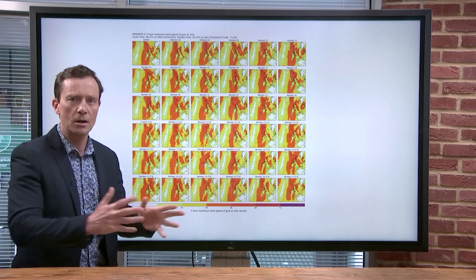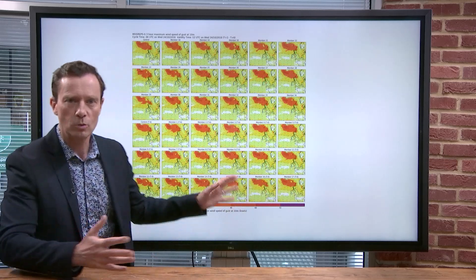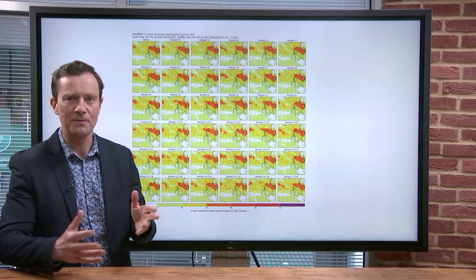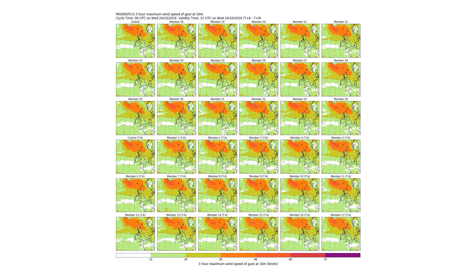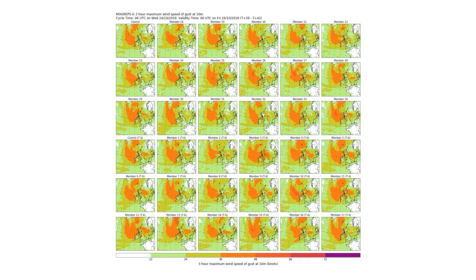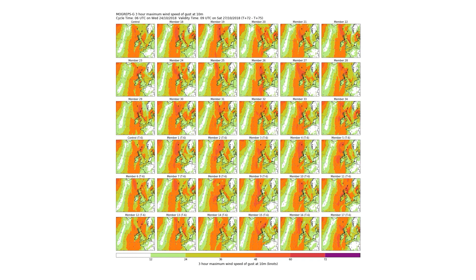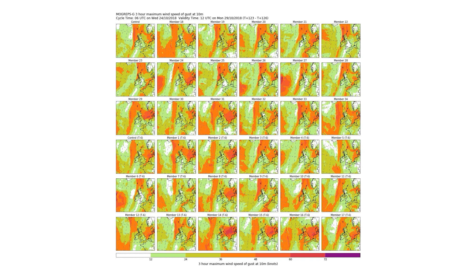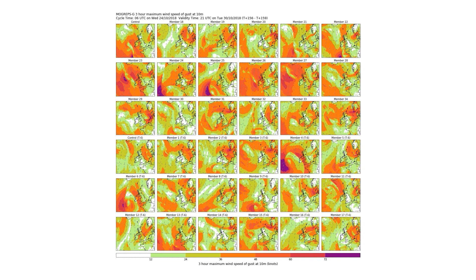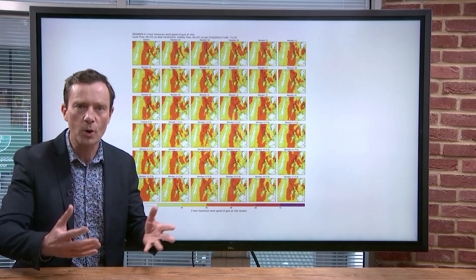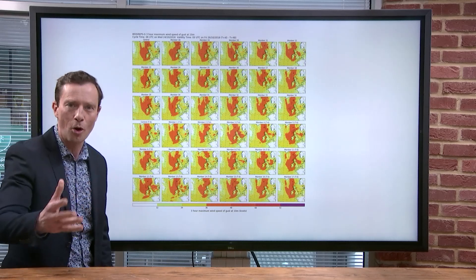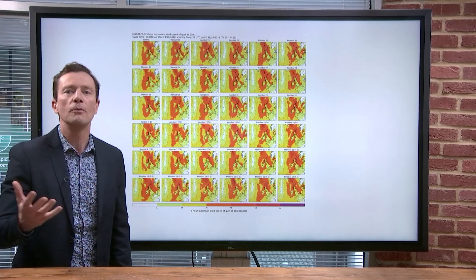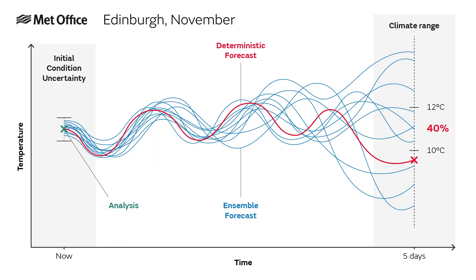This is what an ensemble looks like. They're called postage stamps because of how they look like those sheets of stamps you used to get at post offices. Each one — each stamp — is called a different member, and each one is a different line on that diagram we just saw, a different forecast. Each one is a result of that little shake-up we gave those initial weather conditions — a different possible future atmosphere in that multiverse.